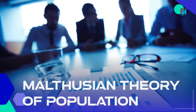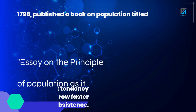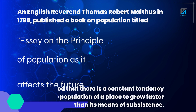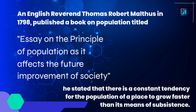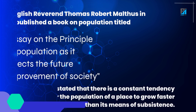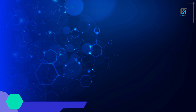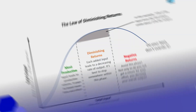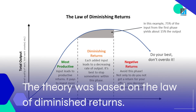Malthusian theory of population: an English reverend, Thomas Robert Malthus, in 1798 published a book on population titled 'Essay on the Principle of Population as it Affects the Future Improvement of Society.' He stated that there is a constant tendency for the population of a place to grow faster than its means of subsistence.